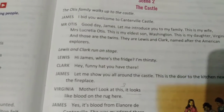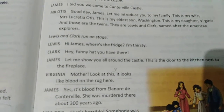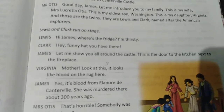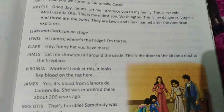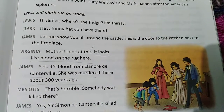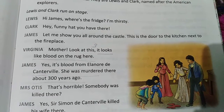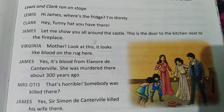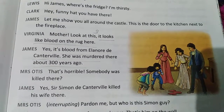Levis and Clark run onto the stage. Levis says: 'Hi James, where's the fridge? I'm thirsty.' Clark asks: 'Hey, what do you have there?' James offers to show them around the castle, pointing out the door to the kitchen next to the fireplace. Virginia then calls out: 'Mother, look at this — it looks like a blood stain on the rug here.' James confirms: 'Yes, it is blood from Eleanor Canterville. She was murdered here about 300 years ago.' Mrs. Otis responds: 'That's horrible — somebody was killed here.'